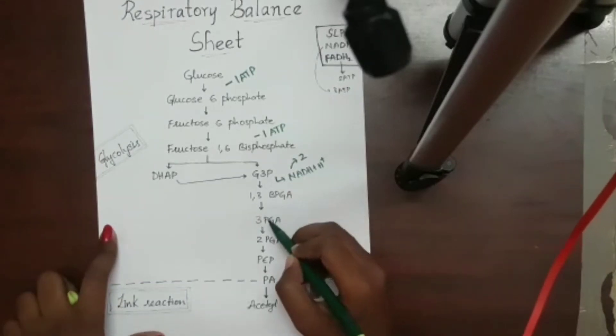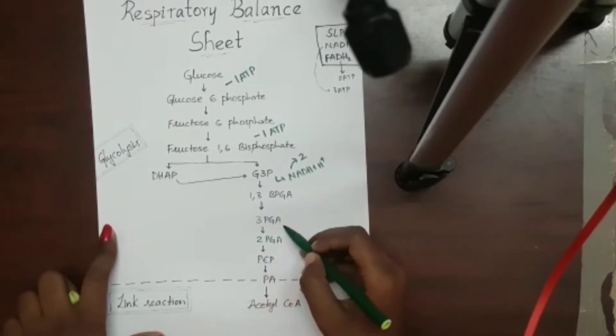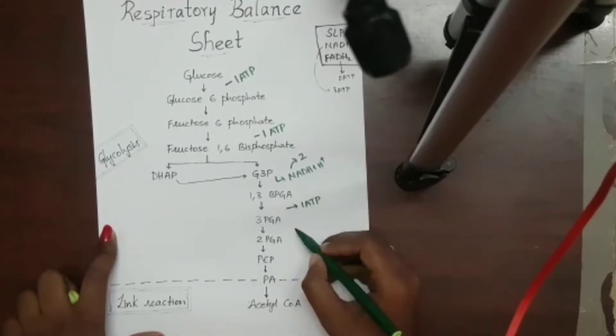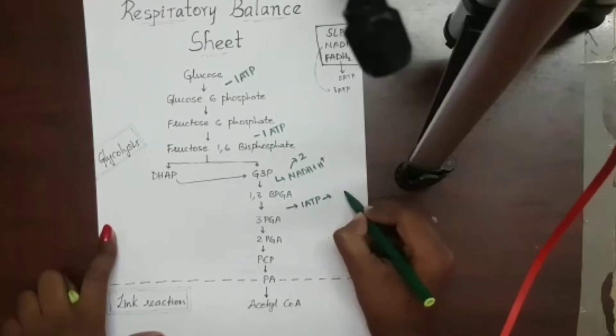From 1,3-bisphosphoglyceric acid to 3-phosphoglyceric acid, there is release of 1 ATP. As there are two molecules, 2 ATP are released.